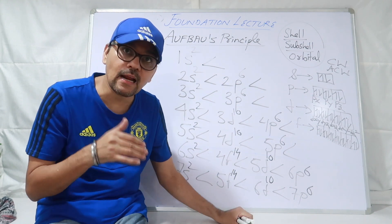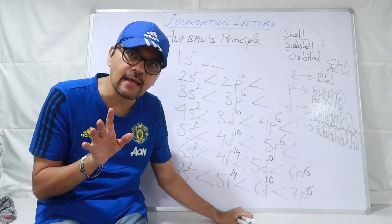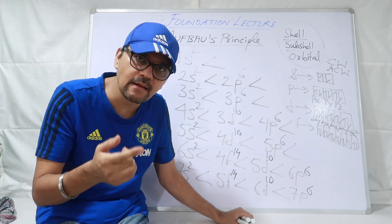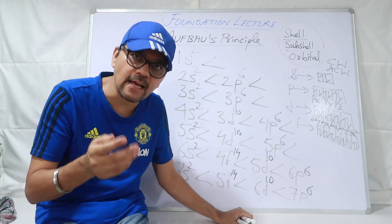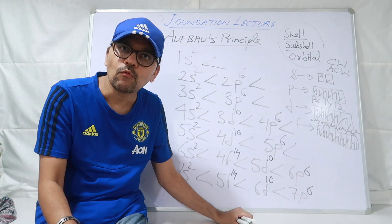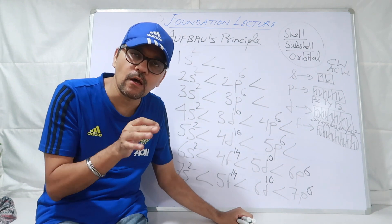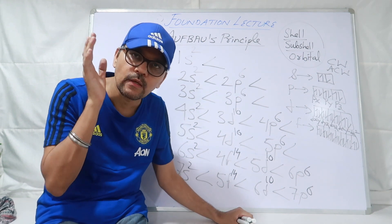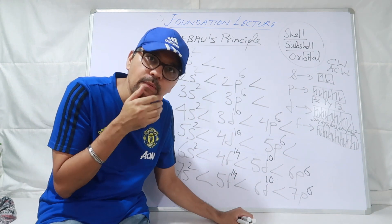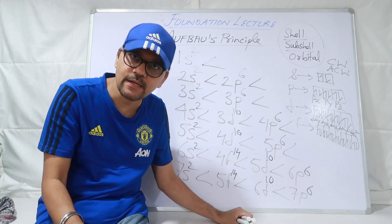Agar aapko 50 to 75% ki range mein samajh mein aa raha hai, to you are on the right track. Nahi aa raha hai — koi baat nahi, second aur third lecture mein aur zyada clear hoga. Theek hai. So very important: pehle aap Aufbau principle learn kar lo, aur ek baar learn kar liya to phir socho yeh periodic table se kaise related hai — apne aap aapko magic samajh mein aayega iska.